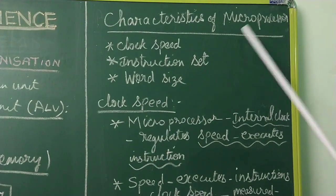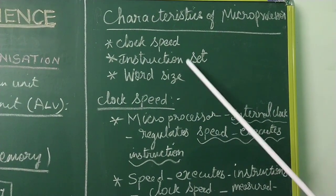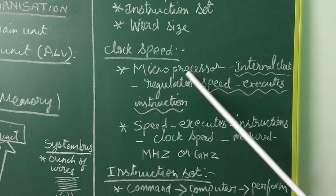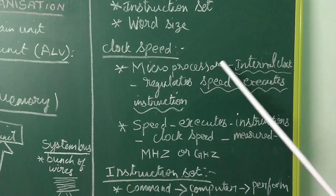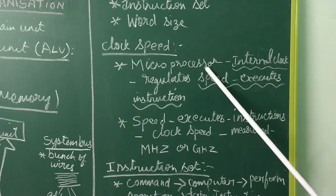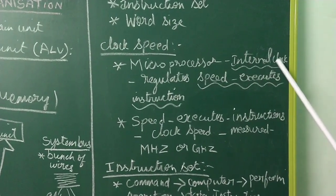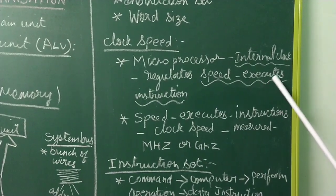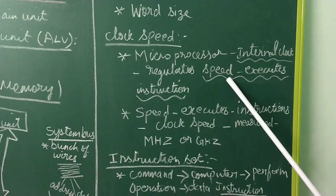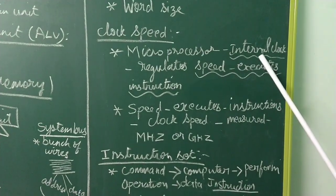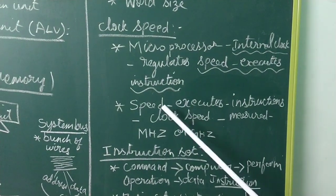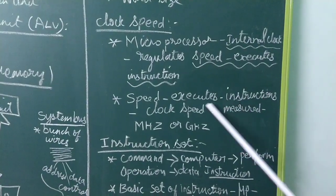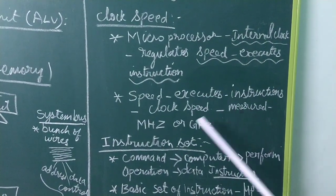Next we will see about the characteristics of the microprocessor. There are three characteristics: clock speed, instruction set, and word size. Clock speed controls the speed of the microprocessor through an internal clock. The clock speed is measured in megahertz or gigahertz.